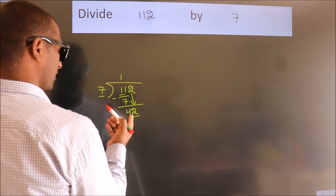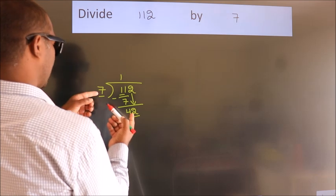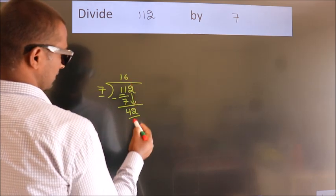So 42. When do we get 42? In the 7 table: 7 times 6 is 42.